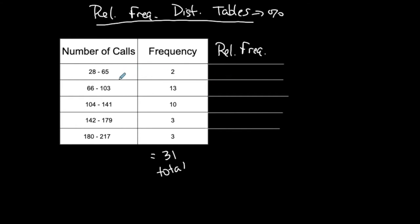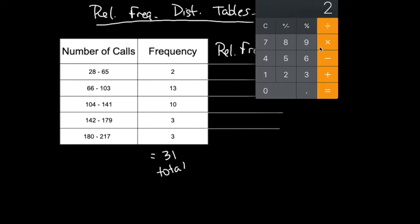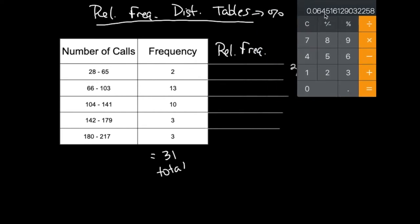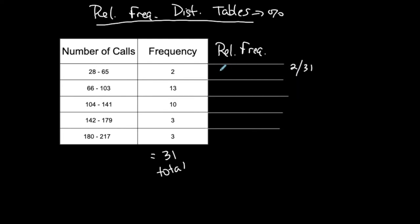Two data values out of 31 total are in this class. So I calculate 2 divided by 31, taking three digits to the right of the decimal so I can convert to a percentage to the nearest tenth. That gives 0.065, or 6.5% of the data values lie in this class, between 28 and 65 inclusive.